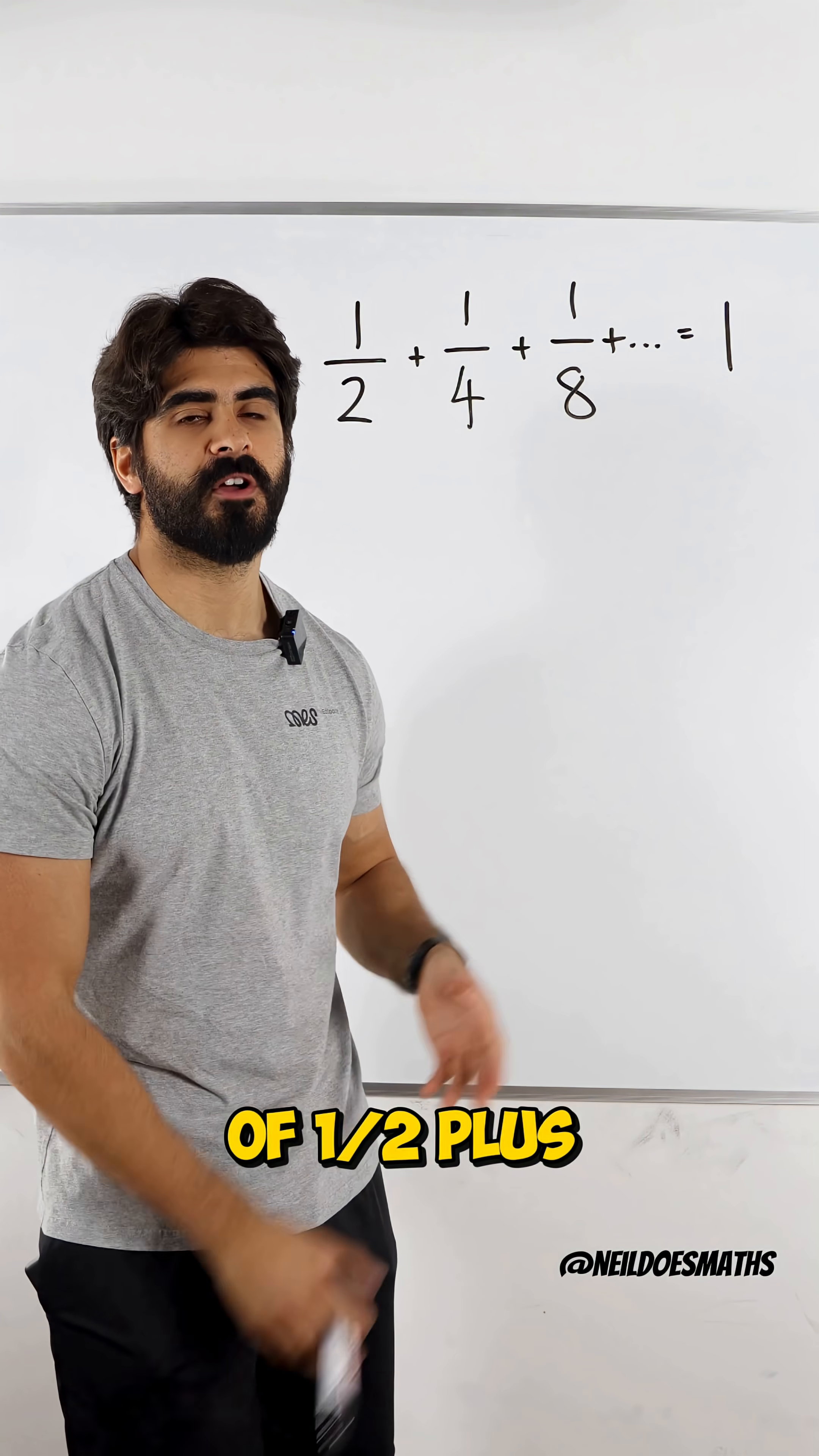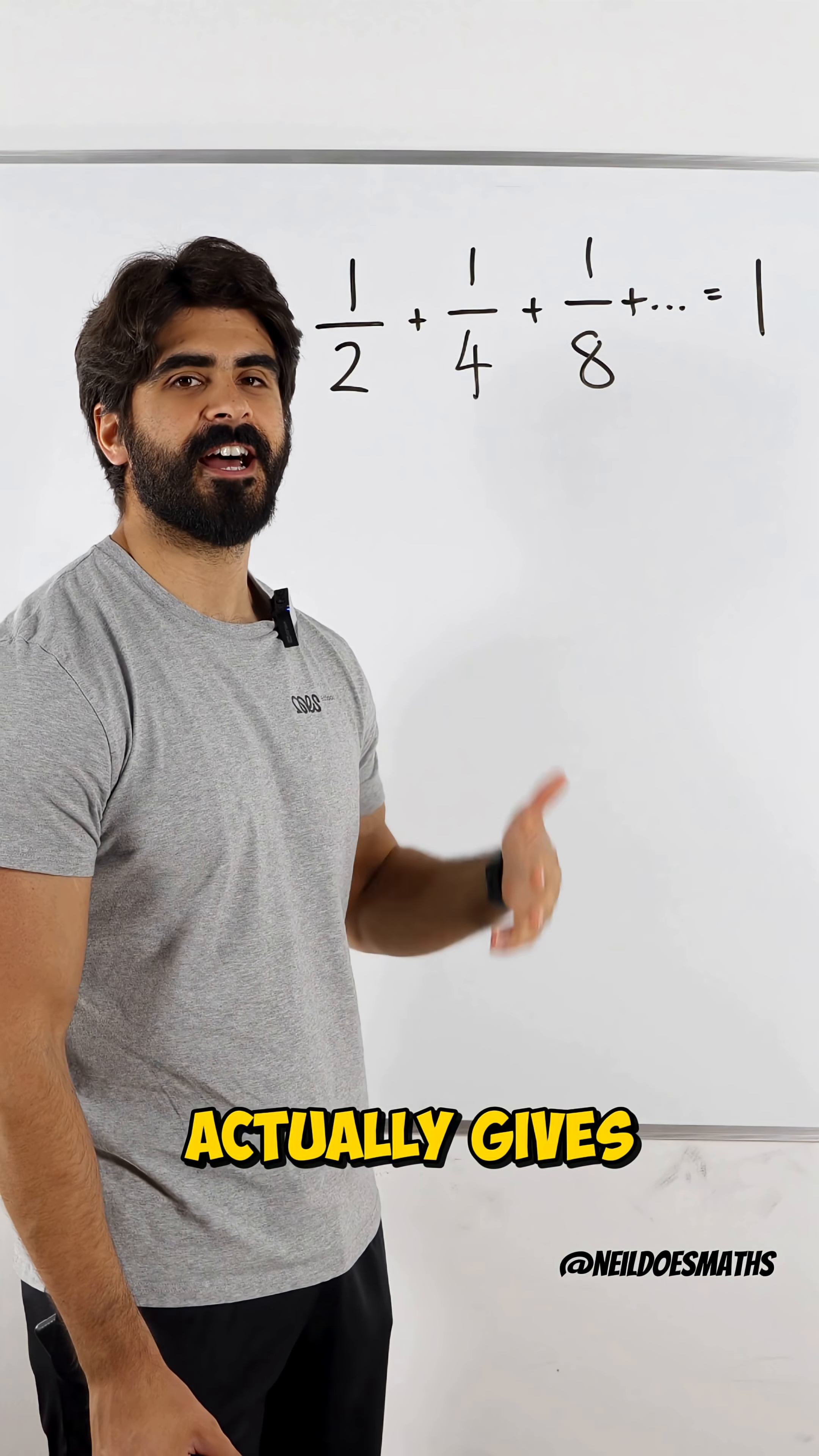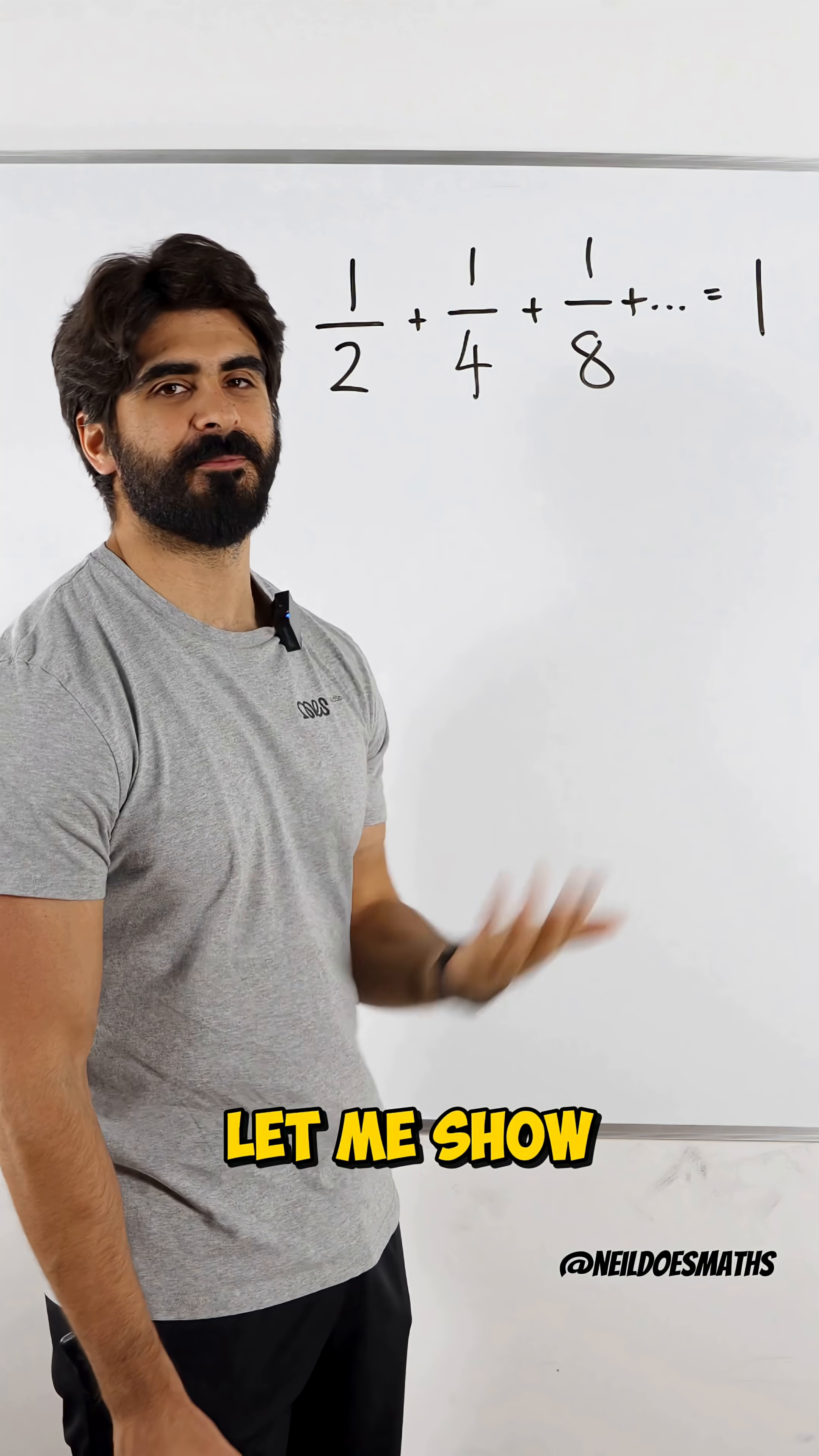Did you know that the value of one-half plus one-quarter plus one-eighth plus et cetera et cetera actually gives you uno? Let me show you why.